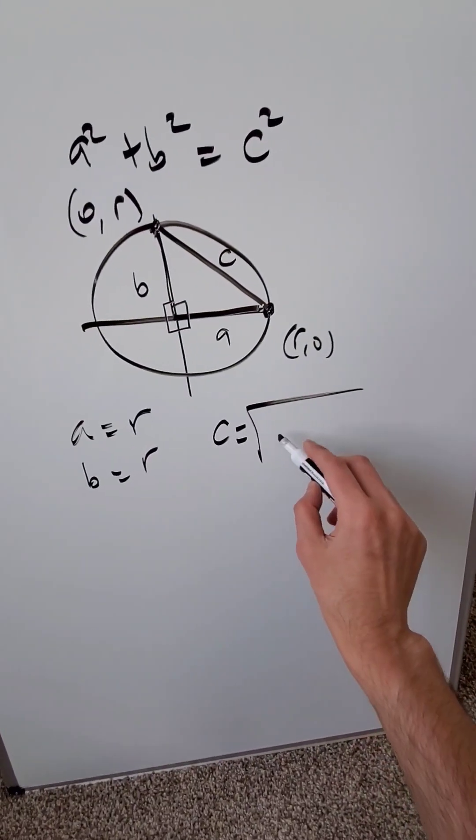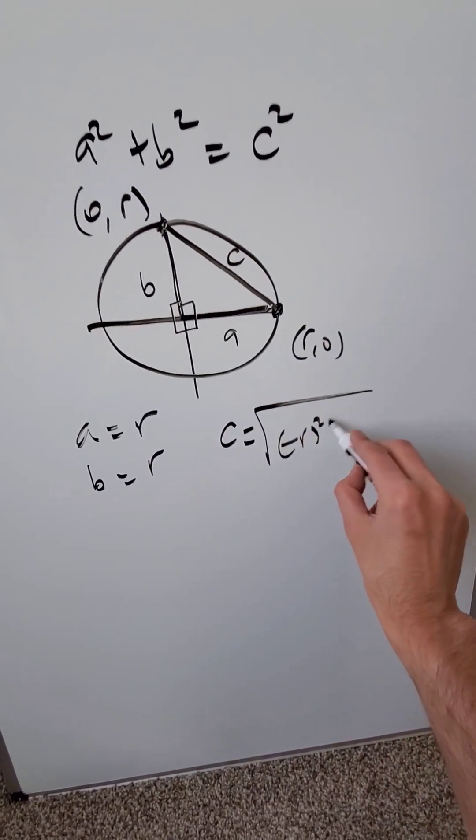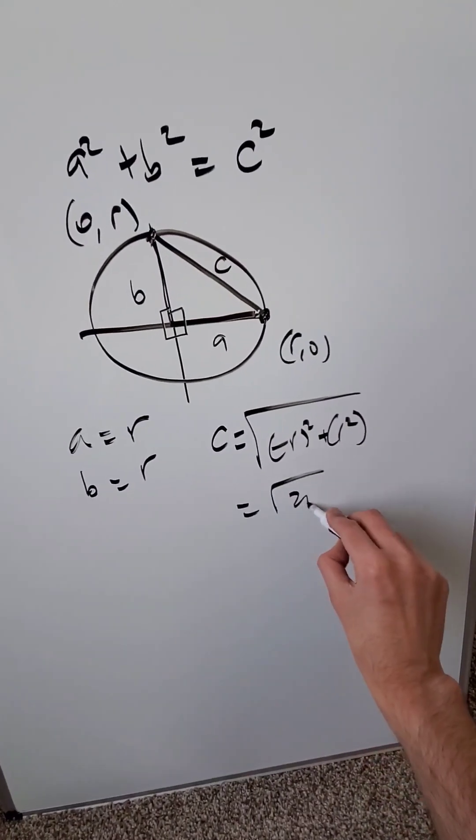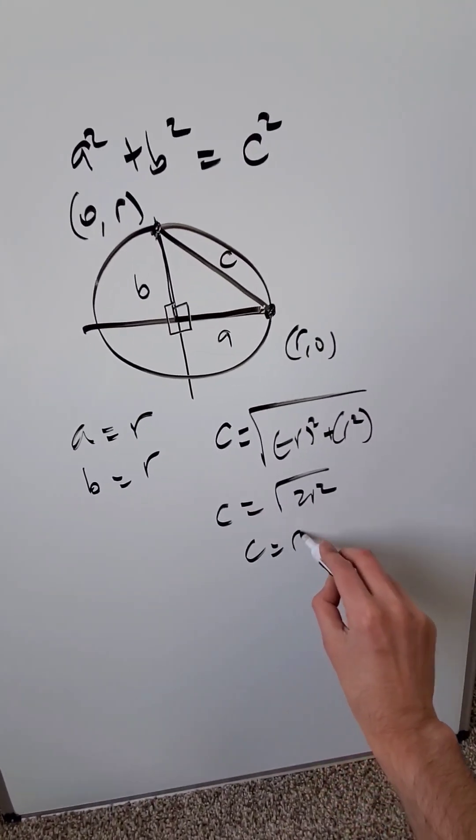Do the distance formula: (y₂ - y₁)² + (x₂ - x₁)². And you compute this, you'll have 2r² and c is equal to r√2.